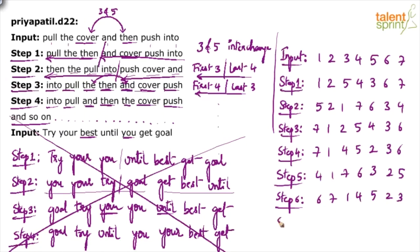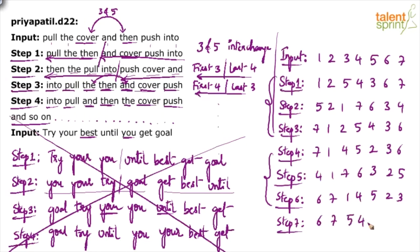Step 7 — again the 3rd cycle. In step 7, positions 6, 7 are as they are; 1, 4, 5 become 5, 4, 1; and 2, 3 are as they are. And so on.